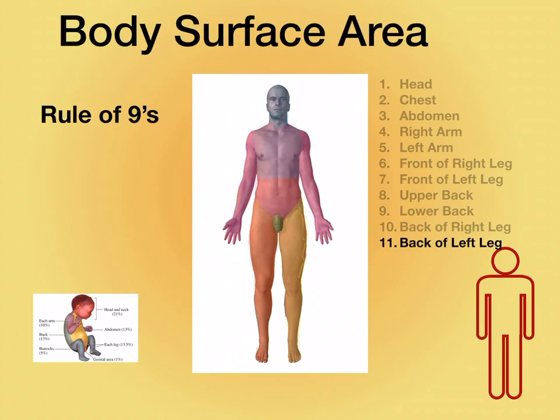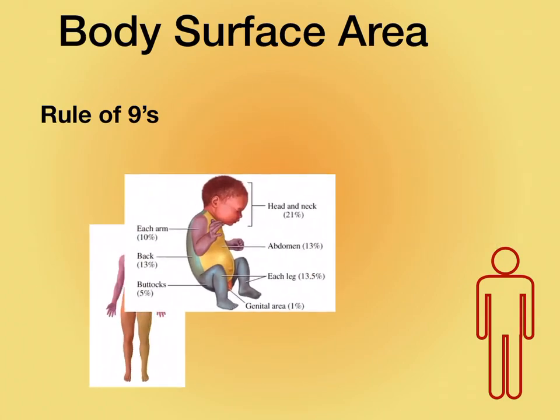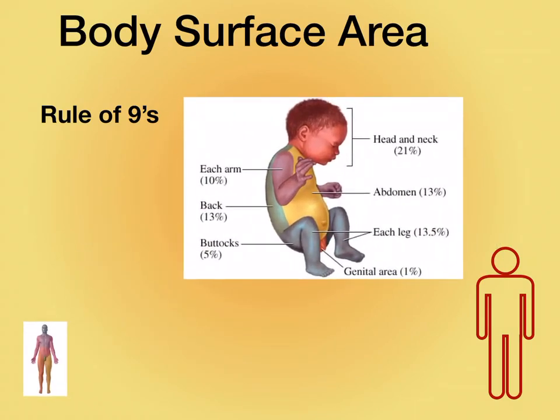I will sometimes look at a leg, and if it's a circumferential burn, call the lower leg 9% if it's all the way around, versus front and back — I can go top and bottom. Now if you add that up, that's 11 times 9 is 99%, and we see the genitalia is the remaining 1%.